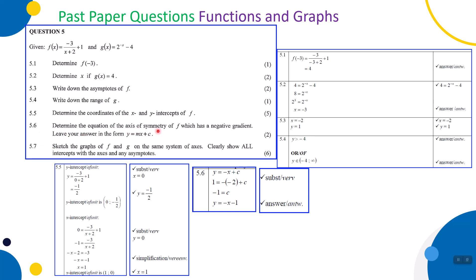5.6, two marks: determine the equation of the axis of symmetry of f which has a negative gradient, leaving your answer in the form y = mx + c. It has two axes of symmetry. For the negative gradient one, it's y = -x + c. Our job is to find c. The asymptotes intersect at (-2, 1), so the axis of symmetry also passes through that point. Substituting: 1 = -(-2) + c, so 1 = 2 + c, giving c = -1. Therefore y = -x - 1.